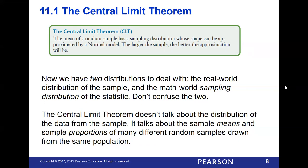The central limit theorem says the mean of a random sample has a sampling distribution whose shape can be approximated by a normal model. The larger the sample, the better the approximation. We now have two different distributions: the actual distribution of our sample — which from the dice throwing was that triangular model — and the sampling distribution for our statistic. The central limit theorem does not talk about the distribution of data within a sample; it talks about the means and proportions across many samples.